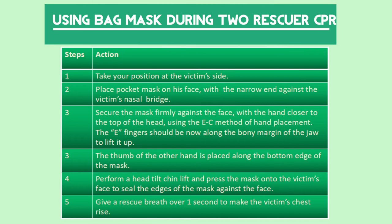For a situation with two rescuers using a bag mask, follow these steps. Take your position at the victim's side. Place the pocket mask on the face with the narrow end against the victim's nasal bridge. Secure the mask firmly against the face with the hand closer to the top of the head using the EC method of hand placement. The fingers should be along the bony margin of the jaw to lift it up, and the thumb of the other hand is placed along the bottom edge of the mask. Perform a head tilt chin lift and press the mask onto the victim's face to seal the edges. Give a rescue breath over 1 second to make the victim's chest rise.